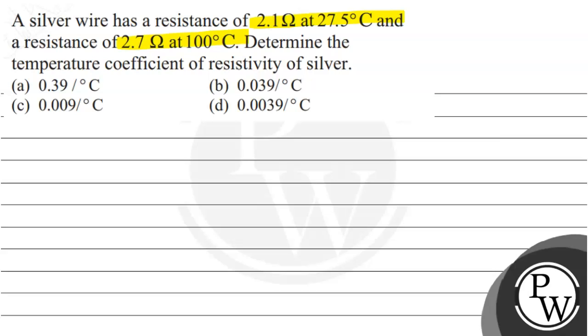Determine the temperature coefficient of resistivity of silver. So, in the question we have R1 which is 2.1 ohm, temperature 1 is 27.5 degree centigrade, R2 is 2.7 ohm and temperature 2 is 100 degree centigrade given. And we need to find the temperature coefficient, basically alpha ki value.